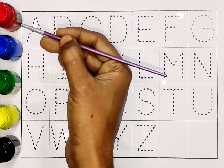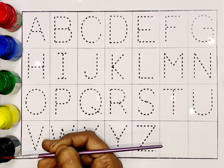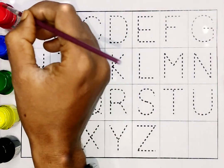Red color, blue color, green color, yellow color, black color. Today we are going to learn ABCD in capital letters.